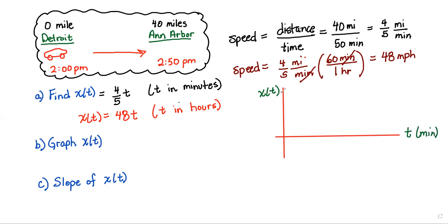And x(t) is in miles. Okay, well we know we start in Detroit, which is our zero mile marker. We know 50 minutes later, so I'll put a mark here for 50 minutes, we've arrived going through Ann Arbor, which is the 40-mile mark. Let me go ahead and draw a line to connect these.